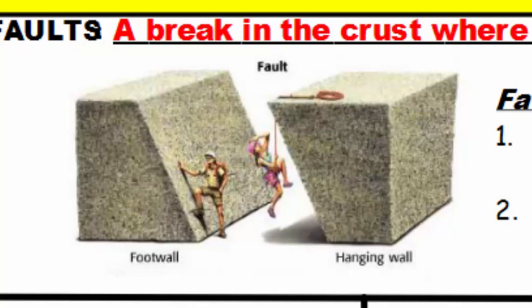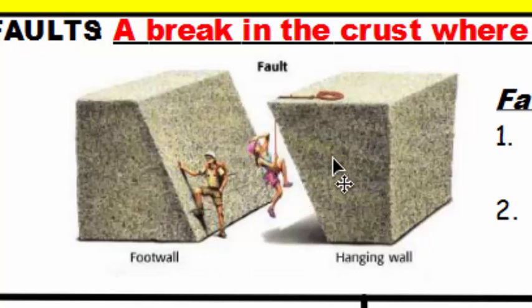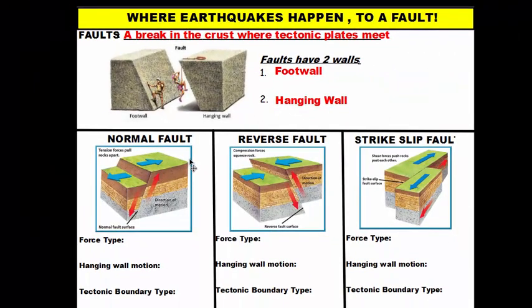The foot wall has a wider base so it's easier to rest your foot on it; the hanging wall is wider at the top so you can hang from it — hence the name. The faults are caused by different types of forces or stresses, and they correspond exactly to the three plate boundaries you already learned about, so one third of the battle is already won.